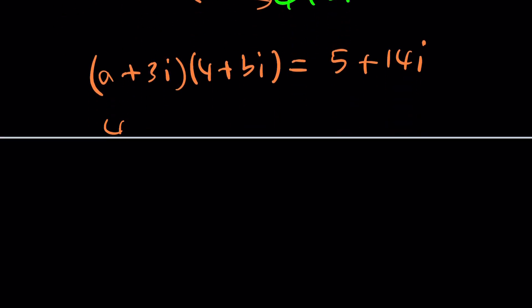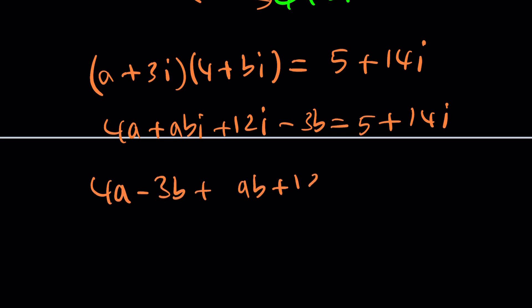Distribute, you get 4a plus abi plus 12i minus 3b. Remember, i squared is negative 1, equals 5 plus 14i. And then from here, we get 4a minus 3b plus ab plus 12i equals 5 plus 14i. And yes, the same thing applies, but this time it's a lot easier.